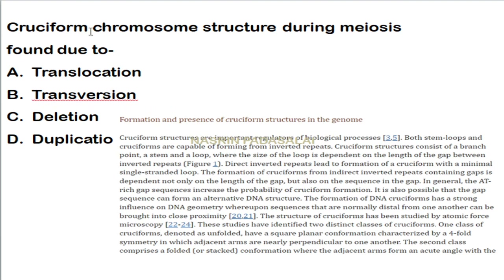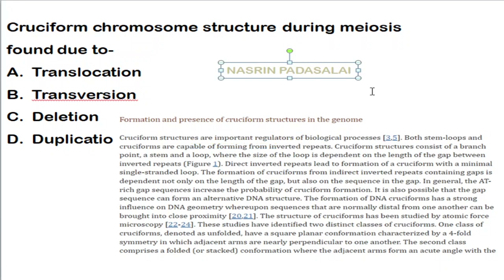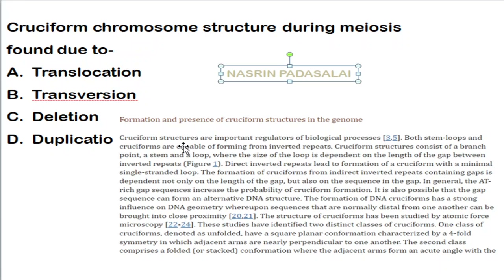Cruciform chromosome structures during meiosis are formed due to the process of transposition. These cruciform structures of DNA are important regulators in biological processes. They are formed from the inverted repeat sequences created during the process of transposition or inversion.